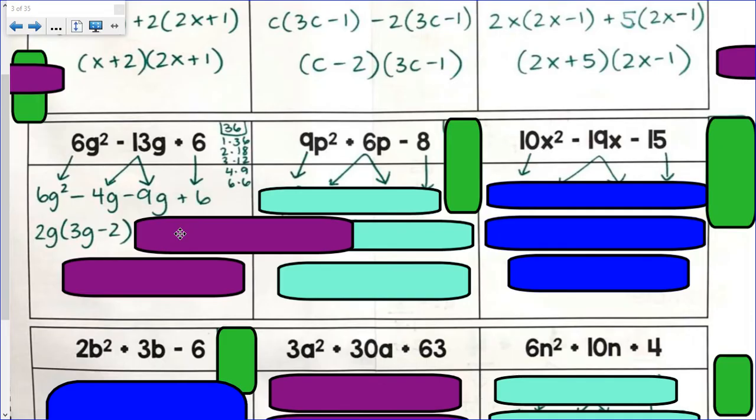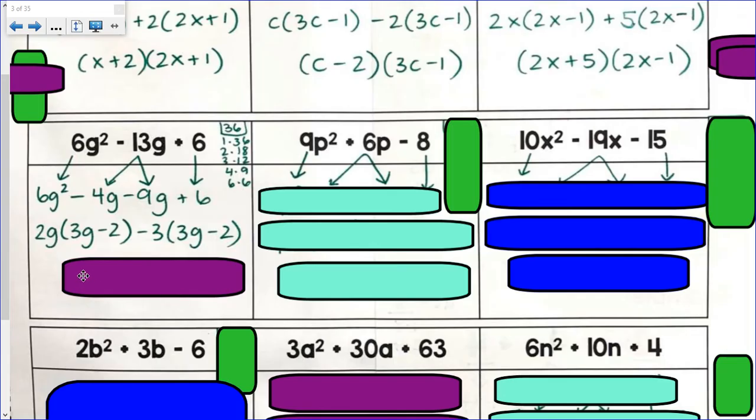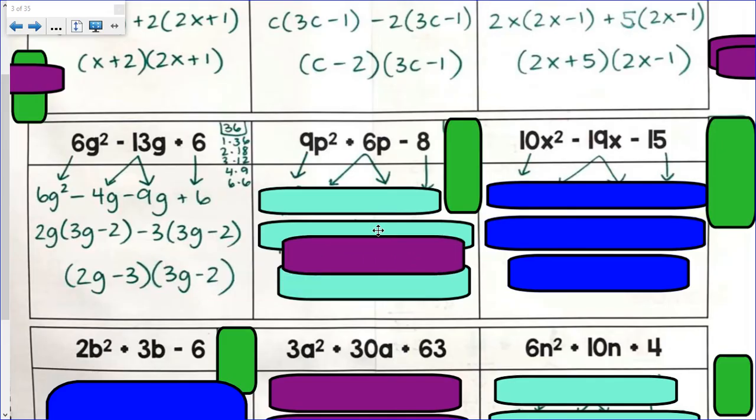I would factor out a negative 3. And inside my parentheses would be 3g minus 2. Factored form. 2g minus 3. 3g minus 2.